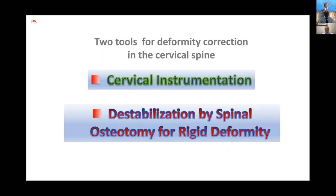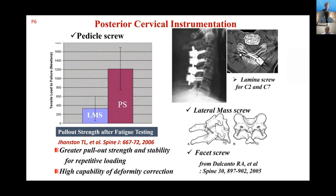We have many cervical instrumentation options: lateral mass screw, pedicle screw, laminar screw, and wire. But the pedicle screw is the strongest, providing greater pullout strength and stability for repetitive loading. We can therefore expect high capability of deformity correction — this is a very good tool for deformity correction of dropped head syndrome.